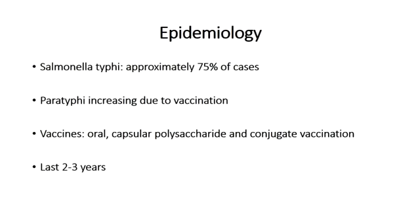Salmonella typhi accounts for the majority of disease, but Salmonella paratyphi, which is found in different parts of the world depending on the serotype A, B, or C involved, is gaining prevalence due to the vaccine that's available against Salmonella typhi.